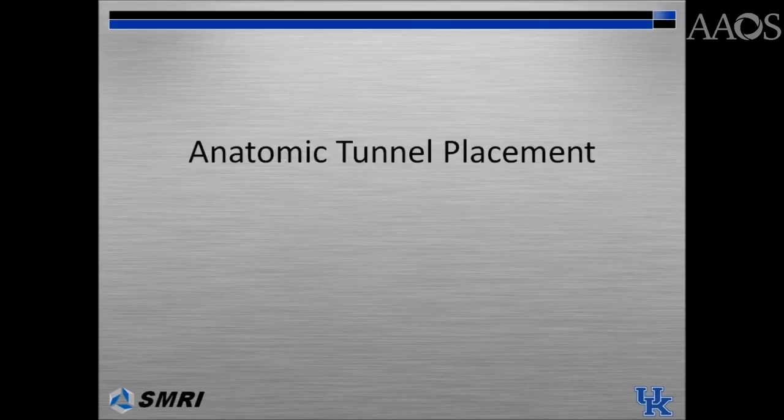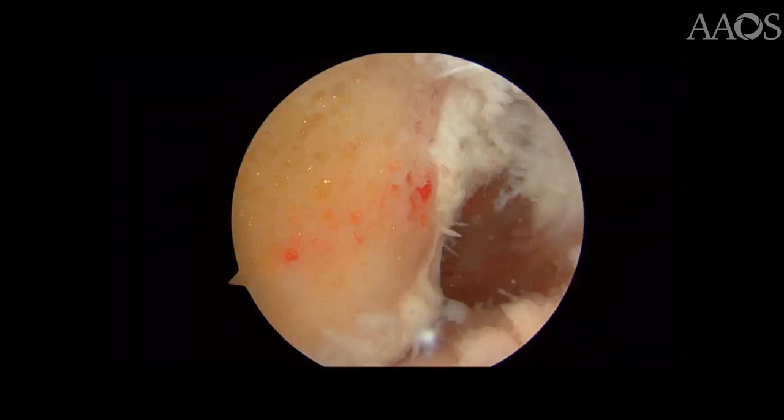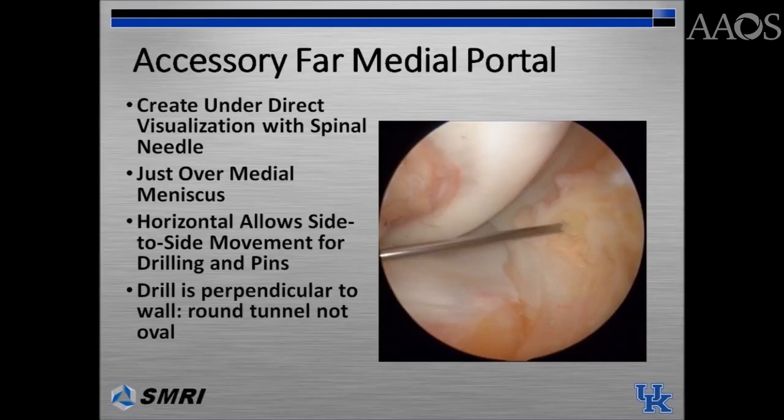Good visualization of the back wall is important in achieving anatomic femoral tunnel placement. For all inside femoral tunnel drilling, an accessory far-medial portal is created. It is important to create this portal under direct arthroscopic visualization with the aid of a spinal needle. This will ensure that the portal is medial and low, just above the anterior horn of the medial meniscus, avoiding iatrogenic injury to the medial meniscus.